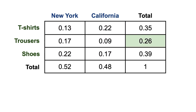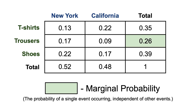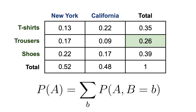Moving on, let's say that we want to calculate the probability of selling a pair of trousers, no matter the location — a probability known as the marginal probability of an event, or simply put, the probability of a single event occurring independent of other events. In our case, we can obtain this value through a process known as marginalization, which sums up the joint probabilities over all the possible values of the variable we want to eliminate. So to compute the probability of selling a pair of trousers, we sum the probability of selling trousers in New York and the probability of selling trousers in California, which gives us 0.26.